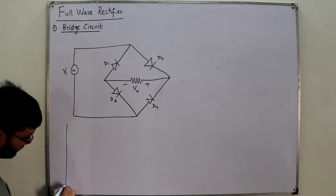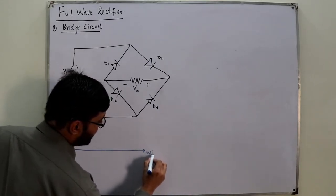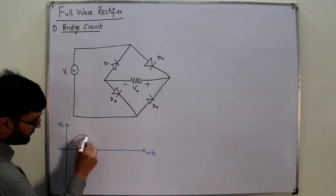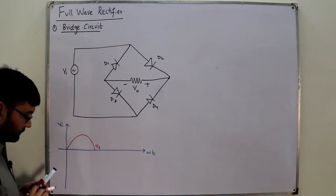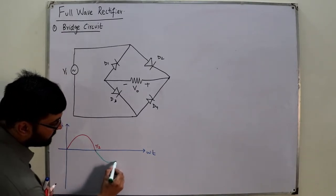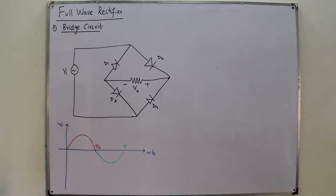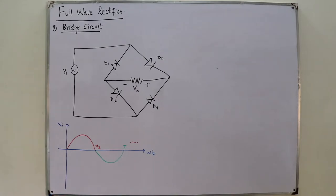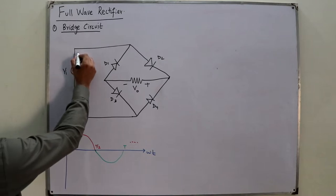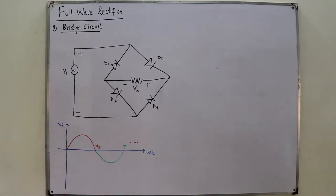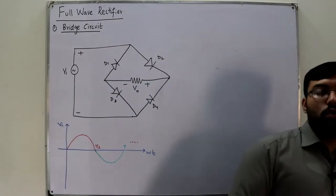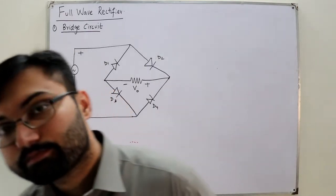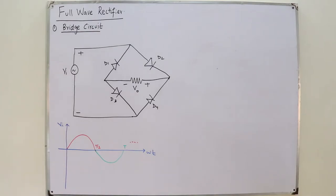Now let's look at the input and output waveforms. On the omega-t axis, for the positive half cycle the sinusoidal input goes from 0 to T/2 (or pi), and for the negative cycle from pi to 2-pi, and then the waveform repeats. Let's define the input polarity — this side positive, this side negative — and once you select the polarity, don't change it or you will get confused.